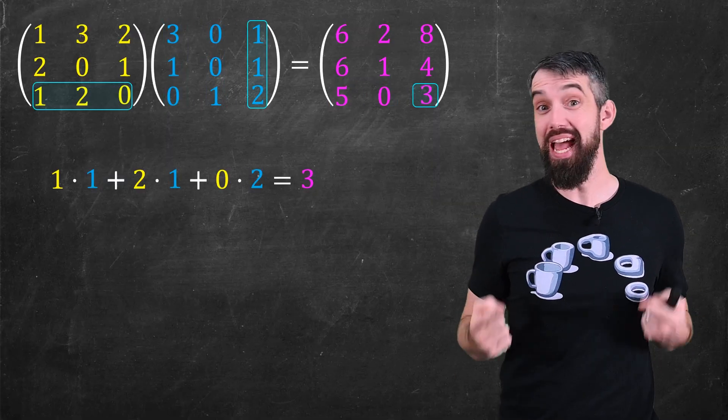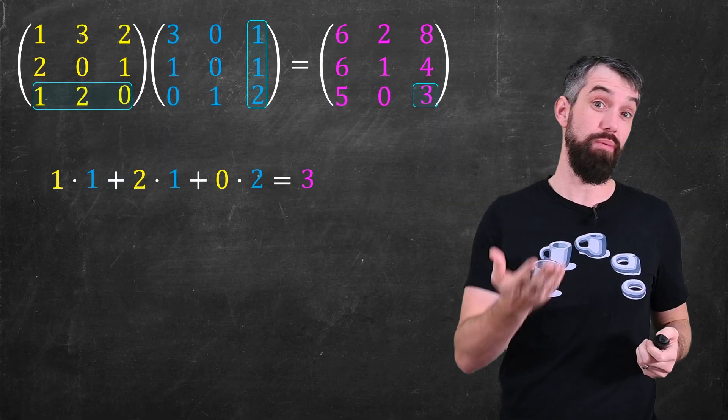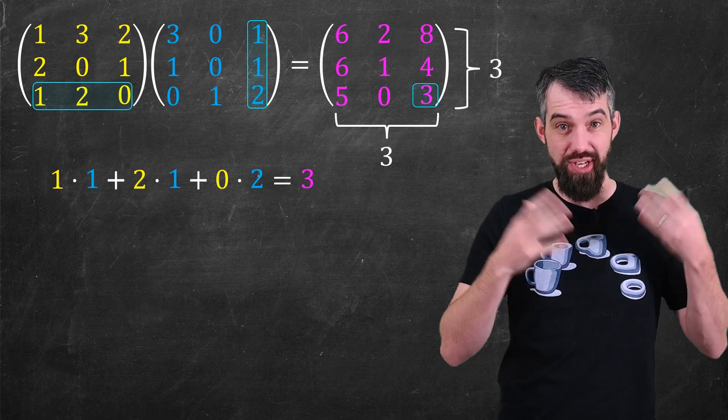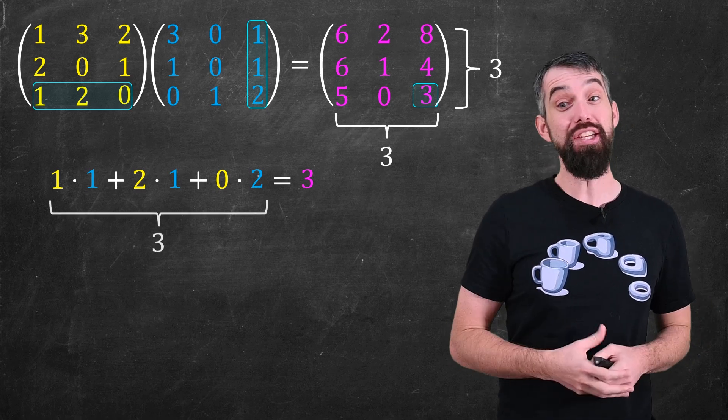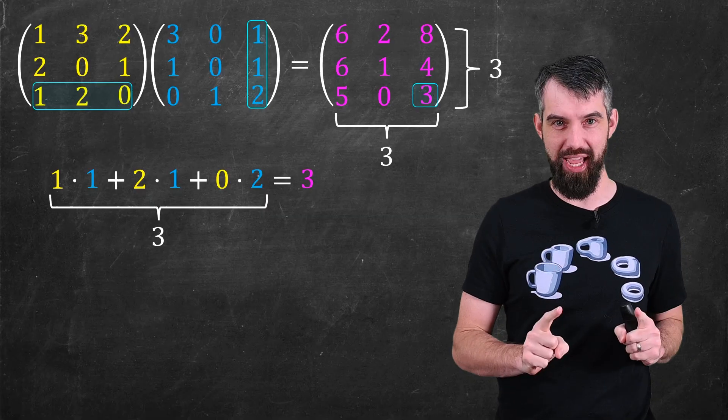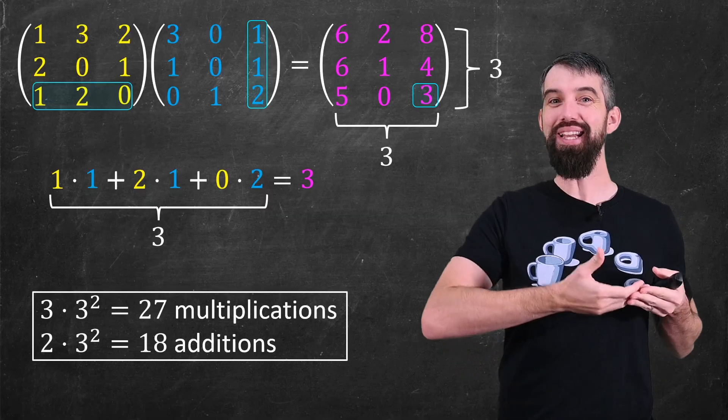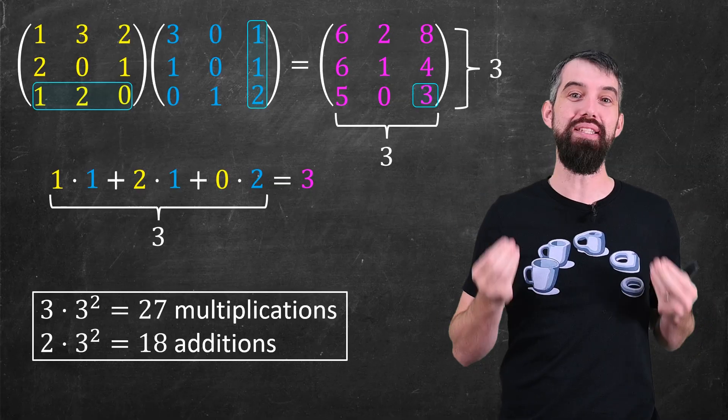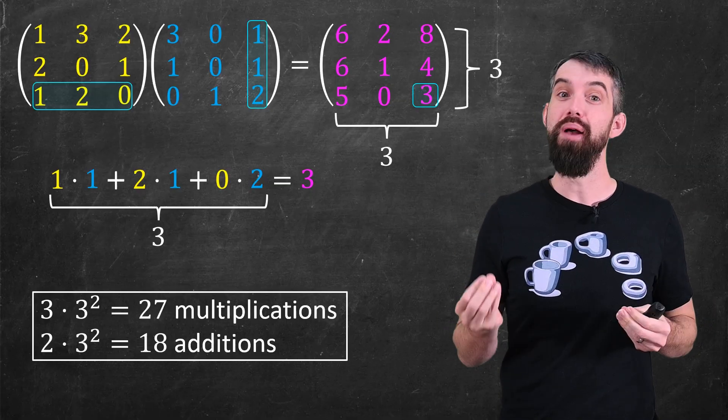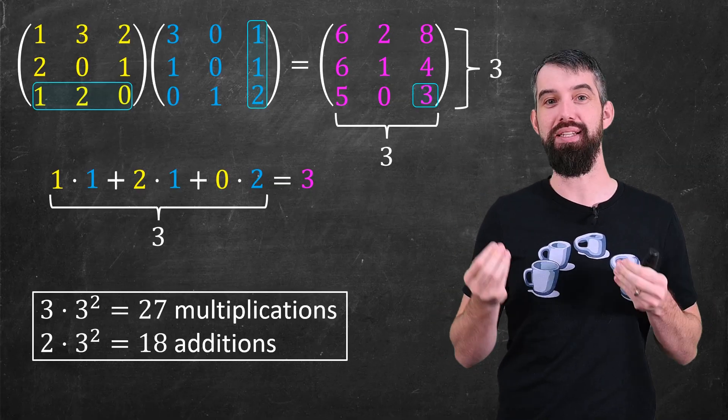Now, how many steps did I actually use to do this? Well, this is a 3x3 matrix, so there's nine different things to compute. And then for each of those nine things, there were three different multiplications and two different additions. So this means there is 3x9, which is 27 or 3 cubed multiplications, but then 2x9 or 18 additions.